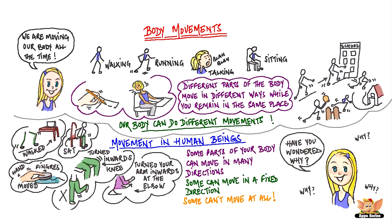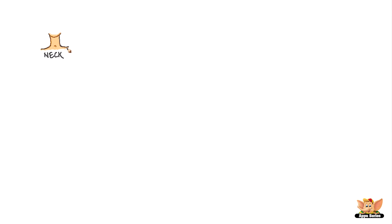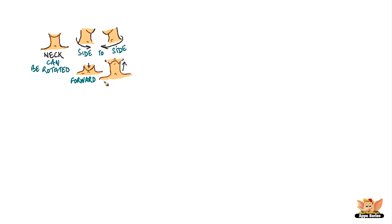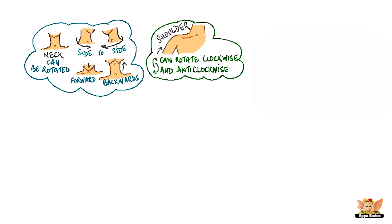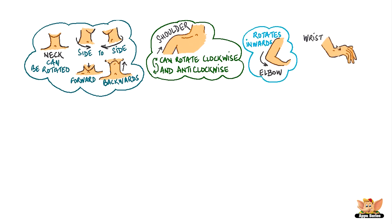Have you wondered why? Let's make a note of some body parts and see how they can move. The neck can be rotated side to side, forward and backwards. The arm at the shoulder can rotate clockwise and anticlockwise. Arms at the elbow can turn inwards. The wrist can rotate — it can turn left, right, up and down.